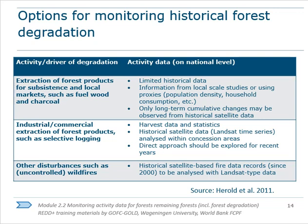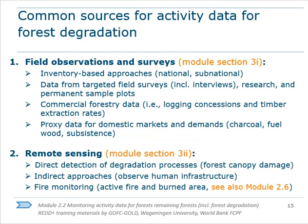You can see in this table an array of sources for activity data for specific forest degradation activities. For fuelwood collection and logging, non-spatial data sets could be used, such as national statistics and records. With fire, historical satellite-based data may be more appropriate. The two categories of common sources for activity data and forest degradation are either field observations and surveys or remote sensing. For field observations or surveys, including interviews or sample plots, those are good sources of data for some degradation activities, like commercial forestry, where you could derive historical extraction rates from official records, or household surveys could provide valuable information on how much fuelwood is used.